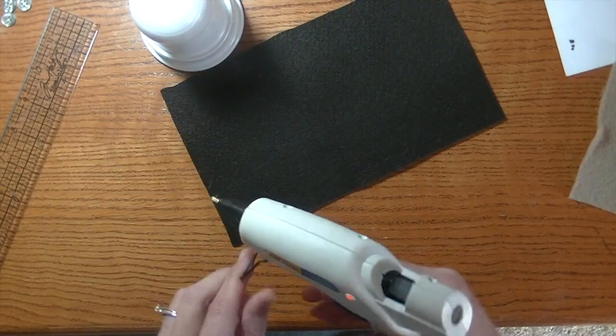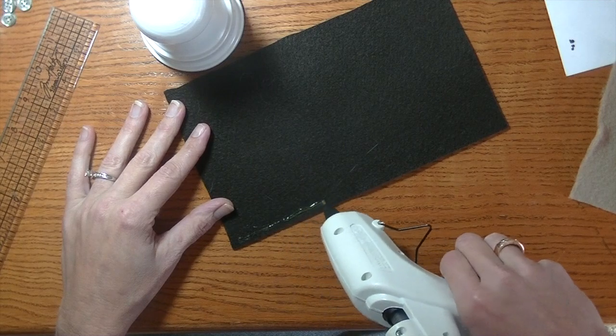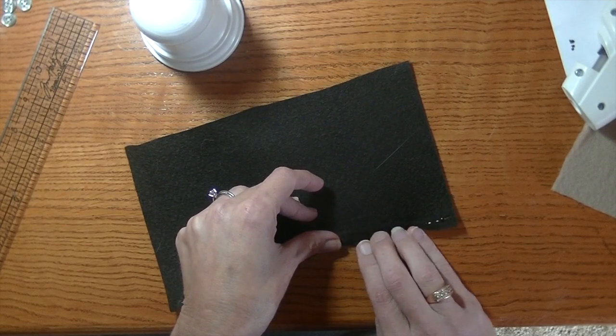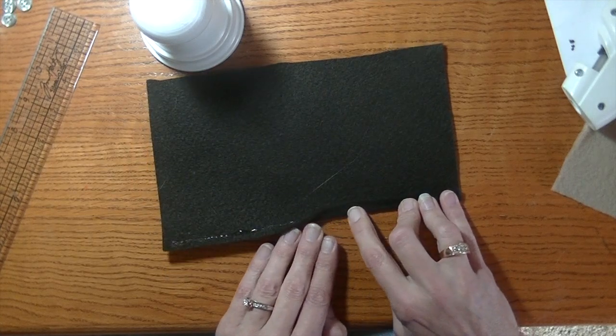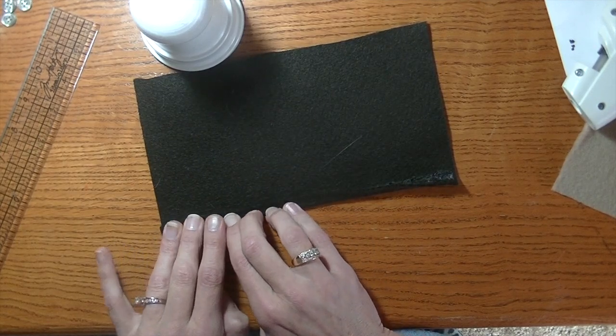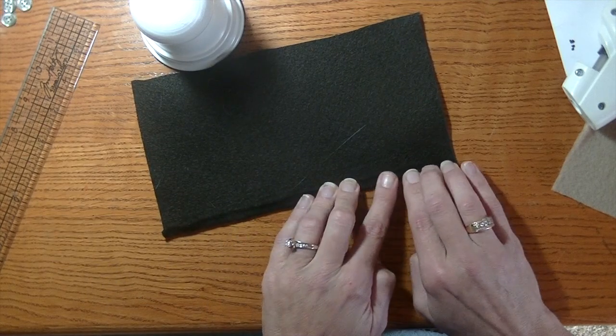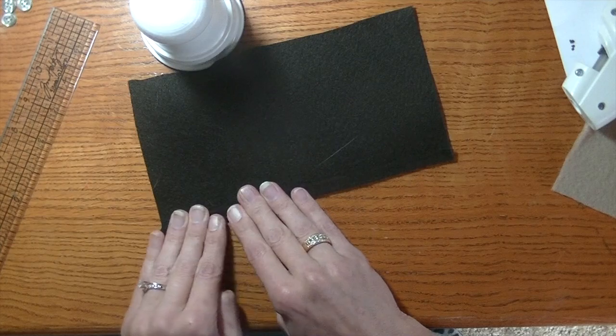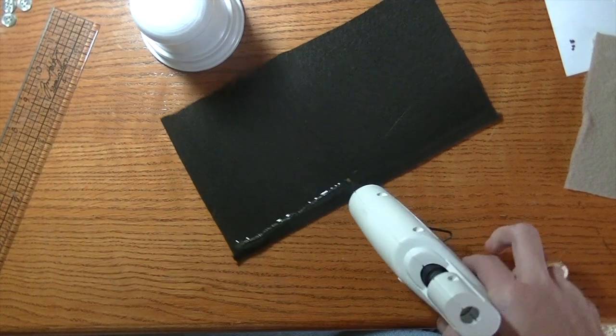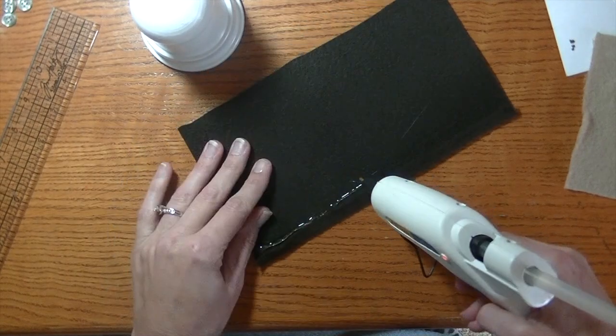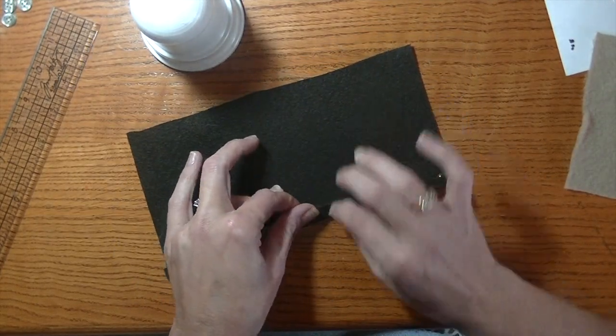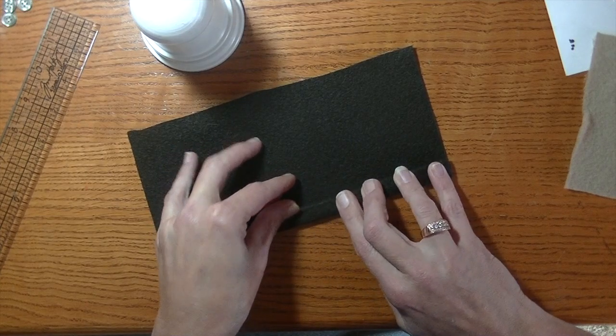I have my glue gun heated up, and what I'm going to do is put a small bead of glue along one of the long ends and then fold this up. This way we can create a little band for his hat. Just kind of hold it for a minute so it dries or kind of grabs. You're looking for maybe a half inch or so of your fold.